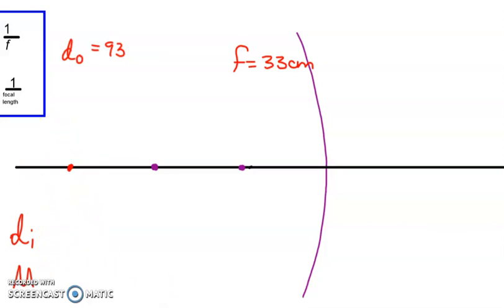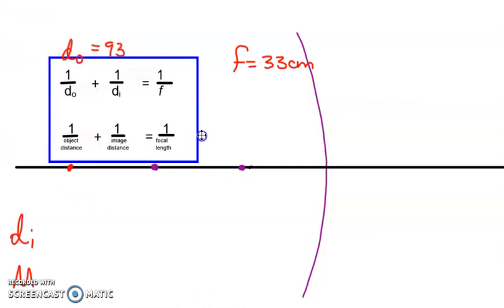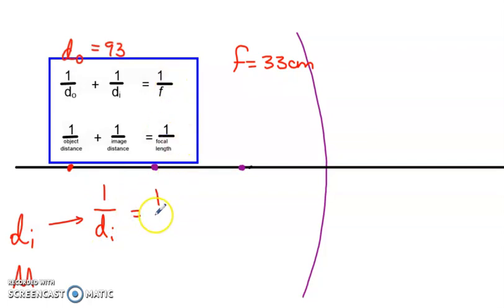To find the distance of the image, we have to use this formula up here. And we have to go and subtract the distance of the object from this side to get that distance of the image. Again, these are all reciprocals, so they can sometimes be a little bit challenging to solve. So, 1 over DI equals 1 over the focal length minus 1 over the distance of the object.